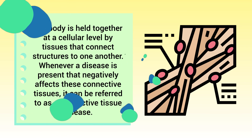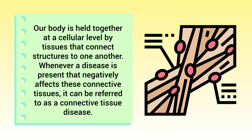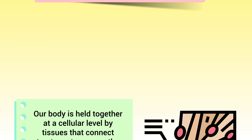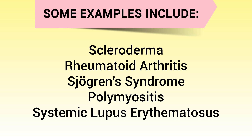Our body is held together at a cellular level by tissues that connect structures to one another. Whenever a disease is present that negatively affects these connective tissues, it can be referred to as a connective tissue disease. Some examples include scleroderma, rheumatoid arthritis, Sjögren's syndrome, polymyositis, and systemic lupus erythematosus.